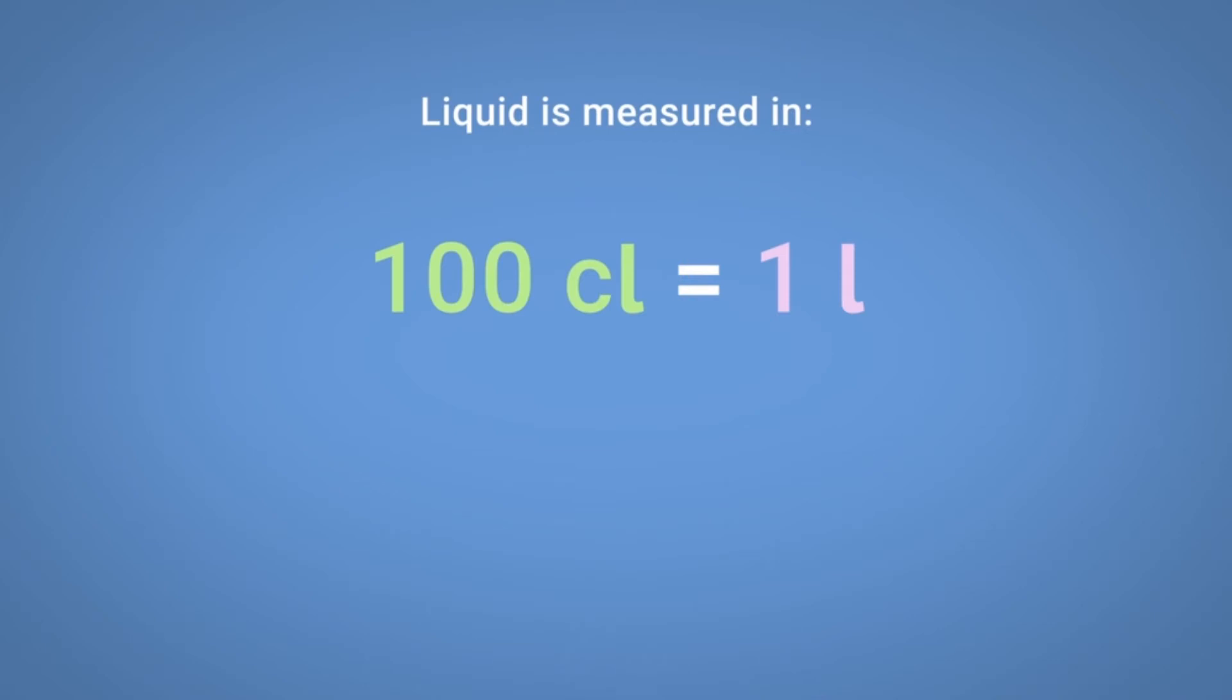100 centilitres is equivalent to 1 litre and 1000 millilitres is equivalent to 1 litre.